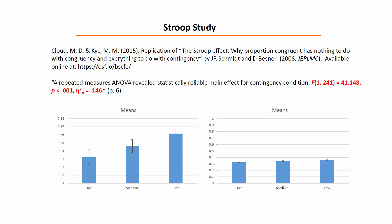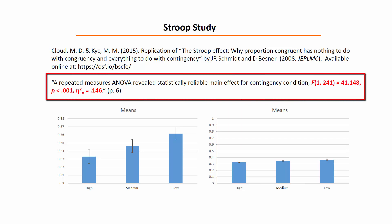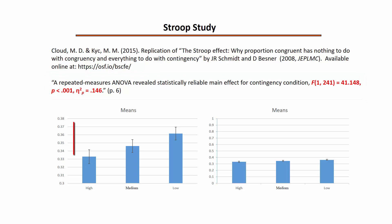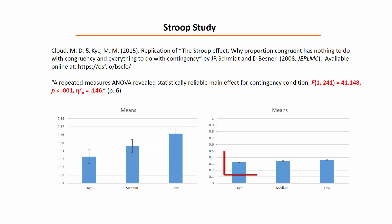Analysis for the replication data are shown on the screen. A repeated measures ANOVA revealed a statistically significant result, p less than .001. Consistent with expectation, the greatest proportion of errors was found for the low condition, followed by the medium condition, and then the fewest errors for the high condition. The means are also plotted here with the proportion of errors scaled 0 to 1 to more accurately reflect the differences.